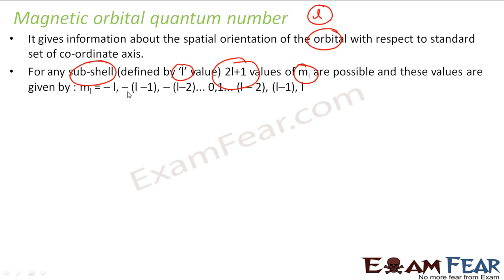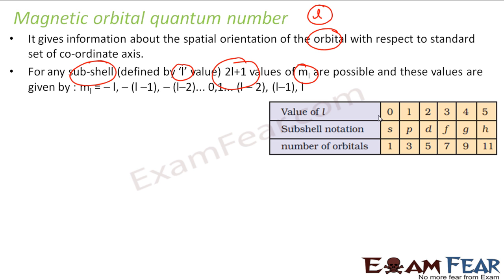That is, M ranges from minus L to plus L. For example, if L is equal to 0 — that means S — the number of orbitals is 1. If L is 1, I can have values minus 1, 0, and plus 1 — number of orbitals is 3. If L is 2, I can have values minus 2, minus 1, 0, plus 1, plus 2 — that is 5 orbitals.